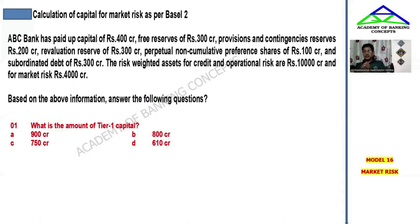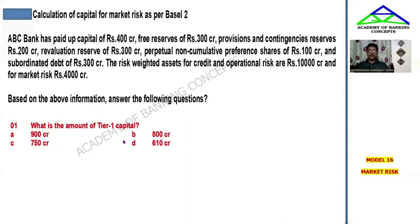This is a Basel 2 and Basel 3 case study. In the risk management video sessions, I have covered the Basel norms, the components of Tier 1 capital, components of Tier 2 capital, and the percentages for each tier. Unless and until you go through and understand those concepts, you cannot answer these case studies. So I hope you have covered that material before we proceed to calculate Tier 1 capital here.